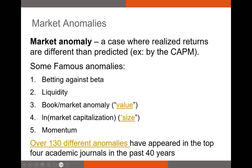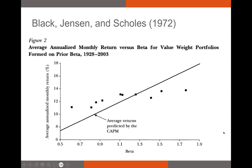Let's look at the betting against beta anomaly. The CAPM was developed in the 1960s, and this anomaly was first discovered by researchers Black, Jensen, and Scholes in the early 1970s. In a graphical interpretation of the security market line, when we sort securities into different portfolios, portfolios with low-beta securities have positive alphas, while the portfolio with the highest beta has on average negative alpha.